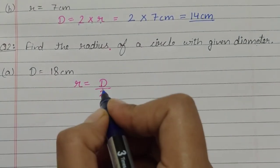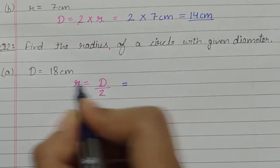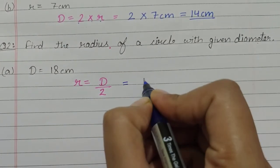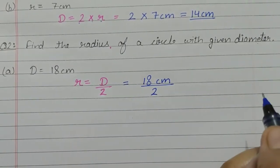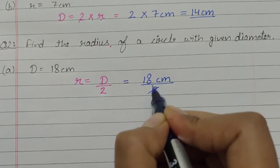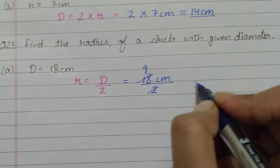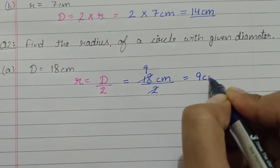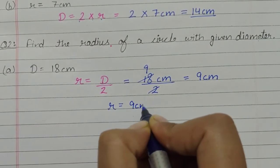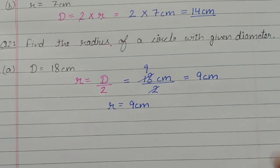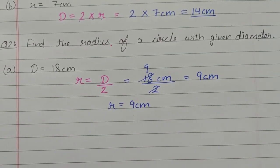Now, put the value of diameter here. The diameter is eighteen centimeter, so write eighteen centimeter divided by two. Two nines are eighteen, so you will get nine centimeter. That is, radius is equal to nine centimeter. Radius will be just half of the diameter.